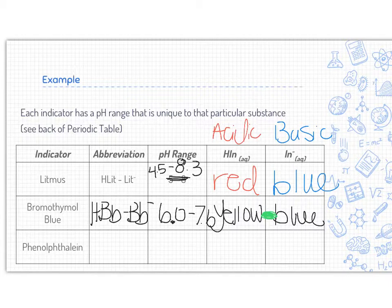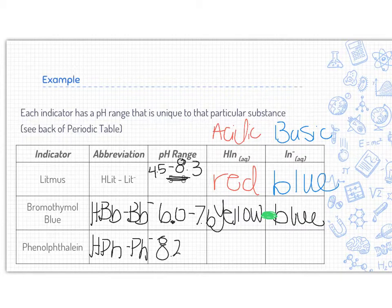Looking at phenolphthalein, we knew its abbreviation previous was HPH and PH minus. Now, its pH range is 8.2 to 10.0. When it's in its acidic version, anything less than 8.2, it will be colorless.